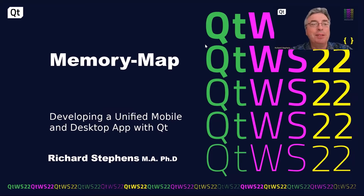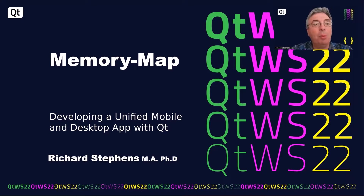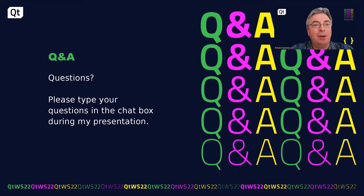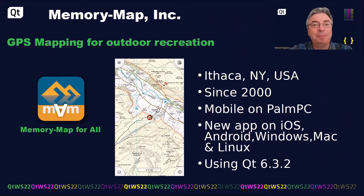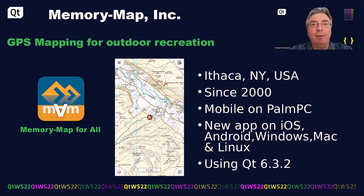Hi, my name is Richard Stephens. I'm with Memory Map, and I'm going to talk about developing a unified mobile and desktop app with Qt. Memory Map is a small company based in Ithaca, New York. We do GPS mapping for outdoor recreation.